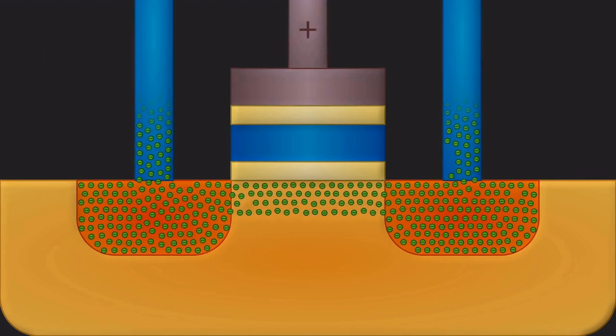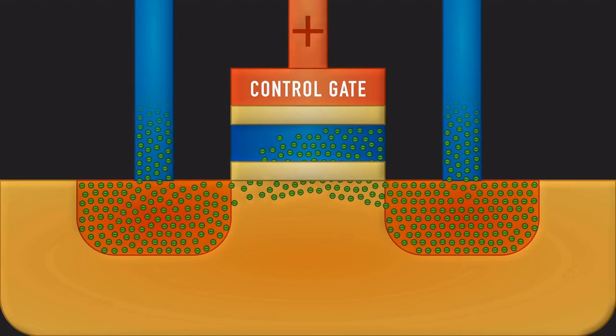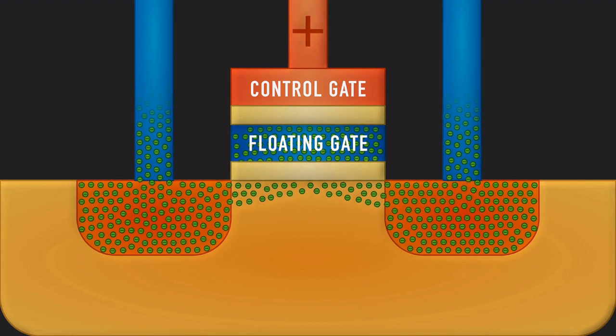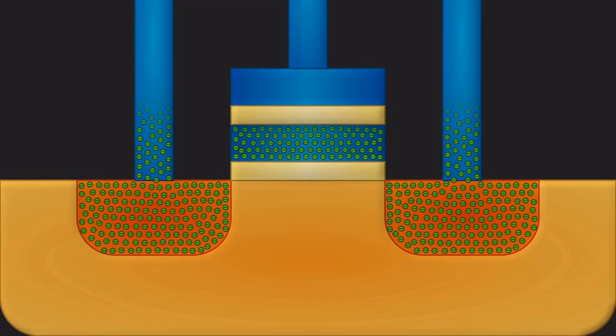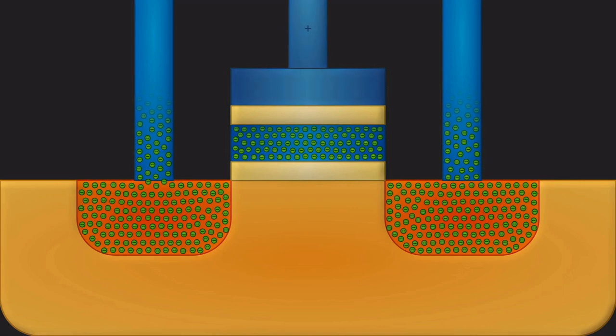If you apply a large positive voltage to the control gate, electrons tunnel up through an insulating barrier and become trapped on the floating gate. Remove the voltage and the electrons can remain on the floating gate for decades, preventing the cell from conducting current and thus how you can store either a one or a zero.